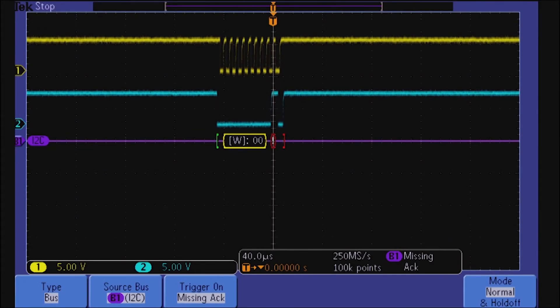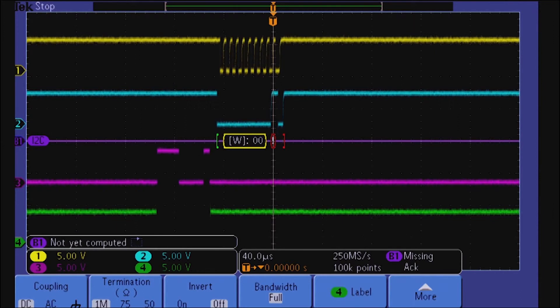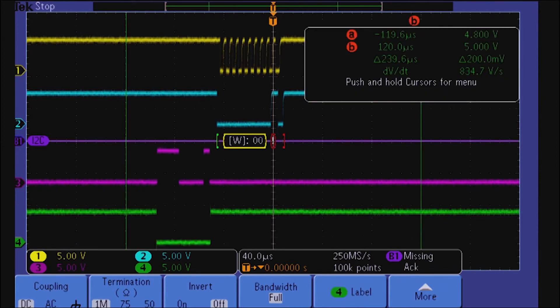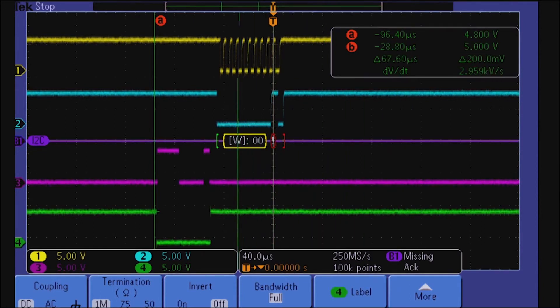While the MSODPO 3000 series is certainly useful for debugging problems with your bus, the real power lies in time correlation of bus messages with other critical signals in your system. Measure how long it takes an I2C command to change the output on your A to D, or see how long it takes before a switch closure generates bus traffic.